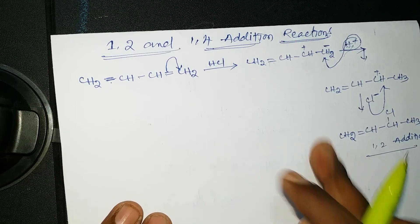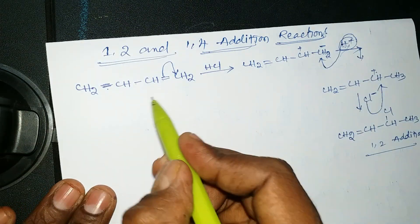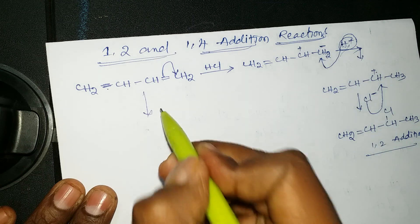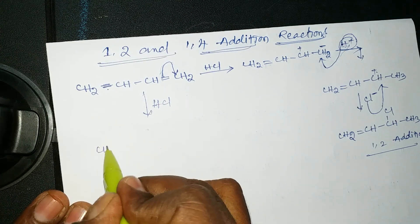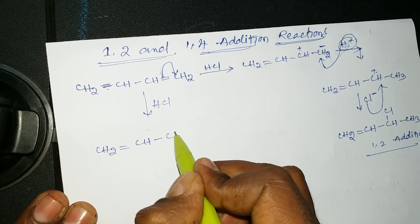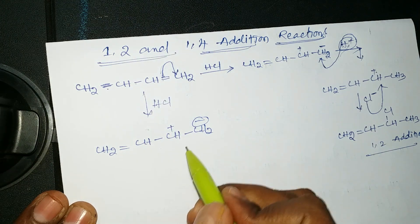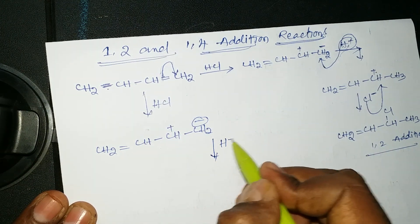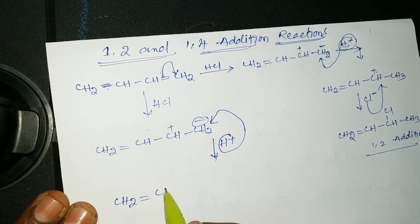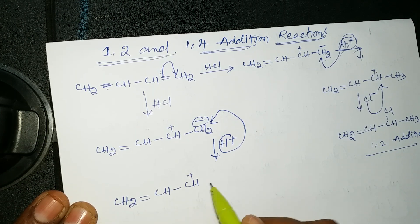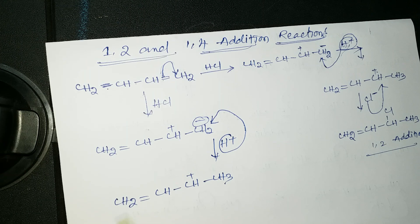In the first case, this is the 1,2 addition reaction product. Now in the second case, the same reaction occurs. The electrophile attacks first — the double bond shifts towards the right-hand side, giving CH2=CH–CH⁺–CH2⁻. The electrophile H⁺ attacks the negative side, giving CH2=CH–CH⁺–CH3.